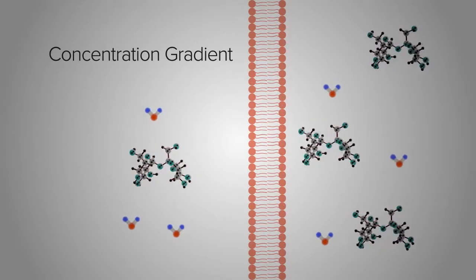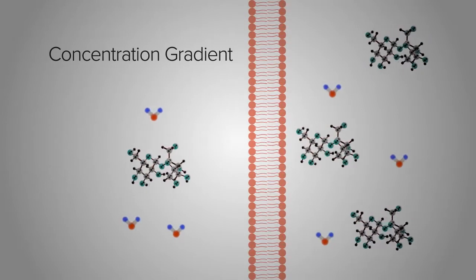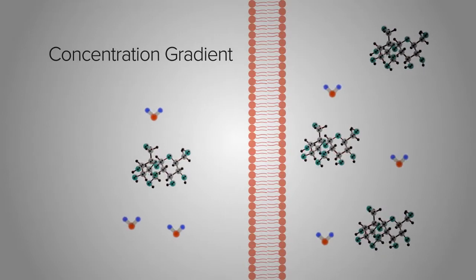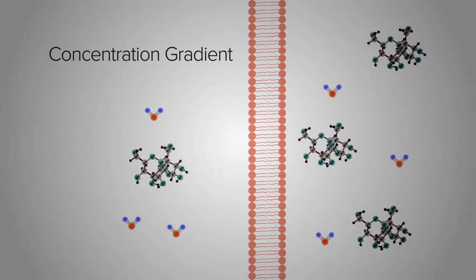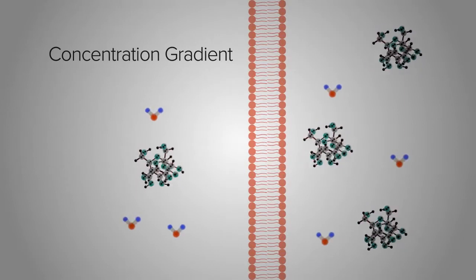Say that we have more sugar on one side of a membrane than the other. That's a concentration gradient, and that's what we're interested in. The concentration gradient of a solute is what determines whether or not water will travel across a membrane.